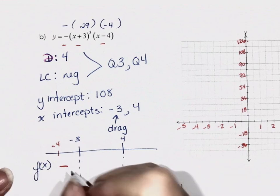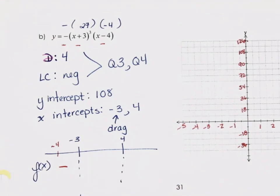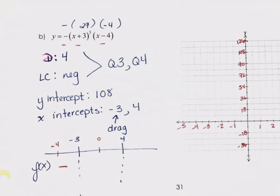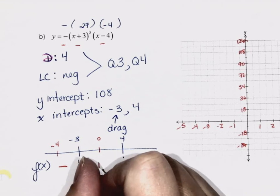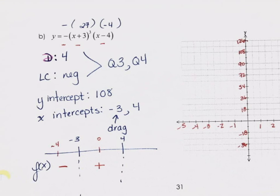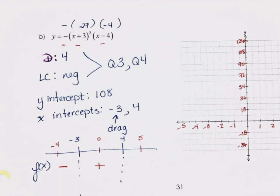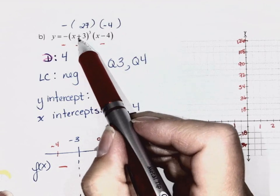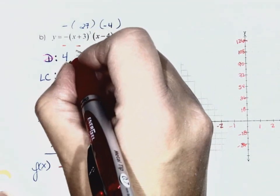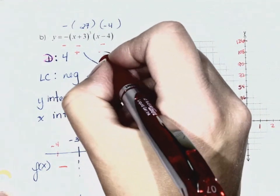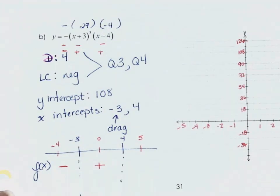Pick a value between negative 3 and positive 4 — use 0, which is your y-intercept. That's going to be positive. Then pick a value greater than 4 — use 5. Put 5 into (x + 3)³: positive cubed is positive. Put 5 into (x − 4): also positive. But we have that negative sign out front, so the answer is negative.